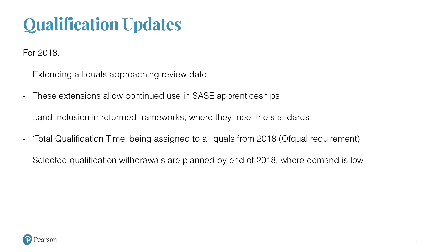For the remainder of work in 2018, there are a number of qualifications approaching their review date in December or April. We're going through an internal process to ensure these are extended, though there are one or two with very low take-up that may be withdrawn. In any case of withdrawal, we would always give decent notice. Our qualification strategy is to keep offering any qualifications that underpin SASE apprenticeships.